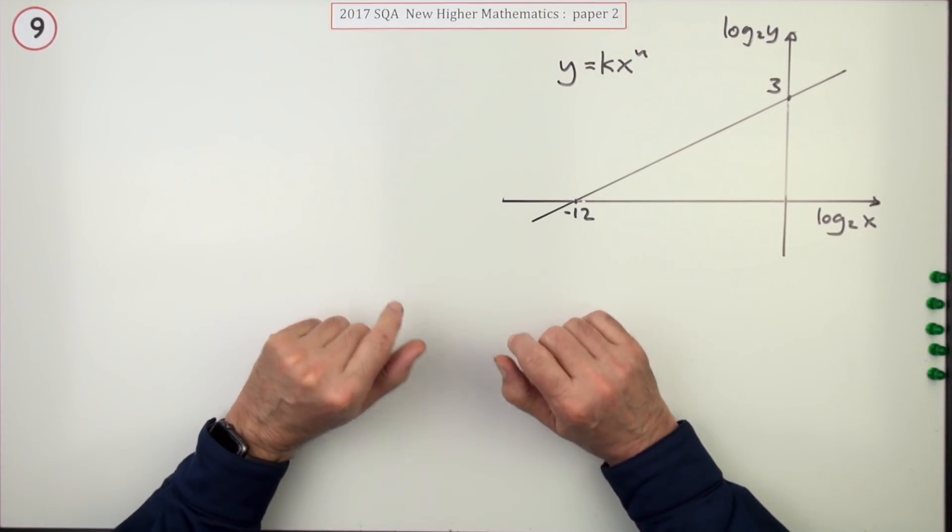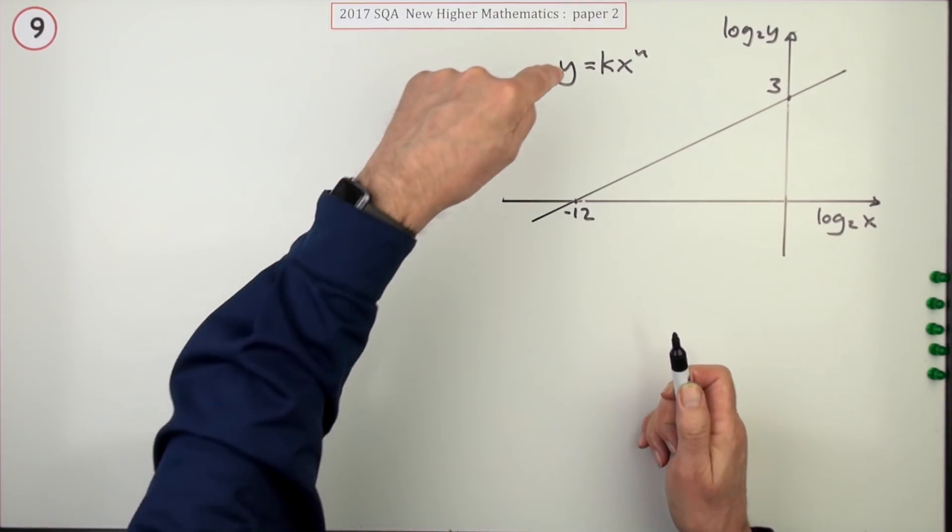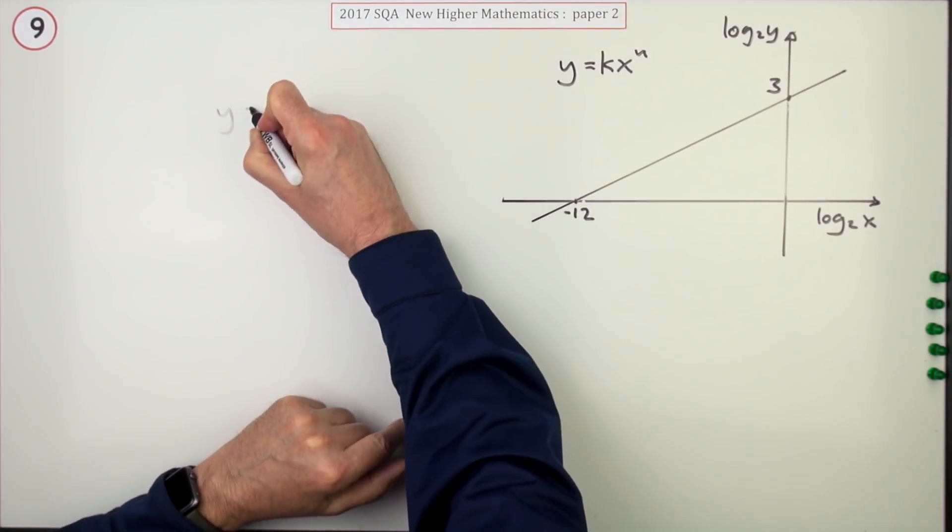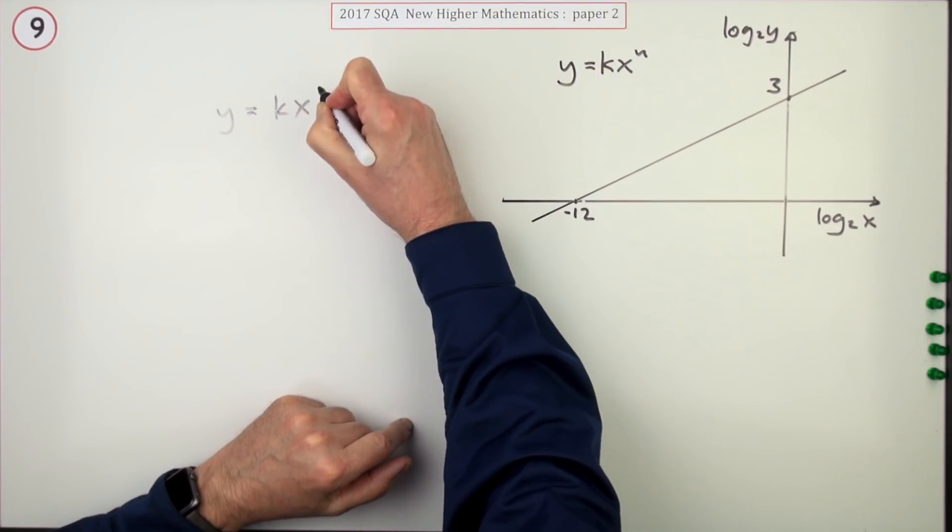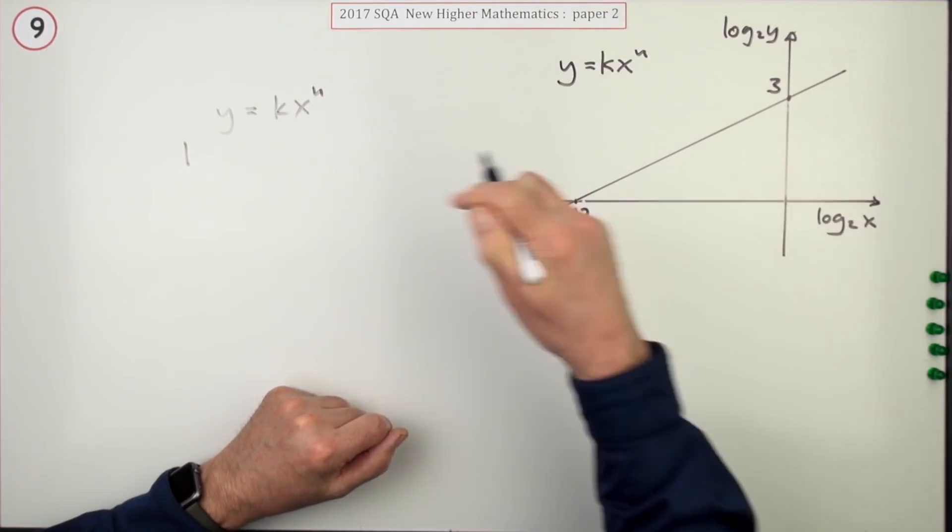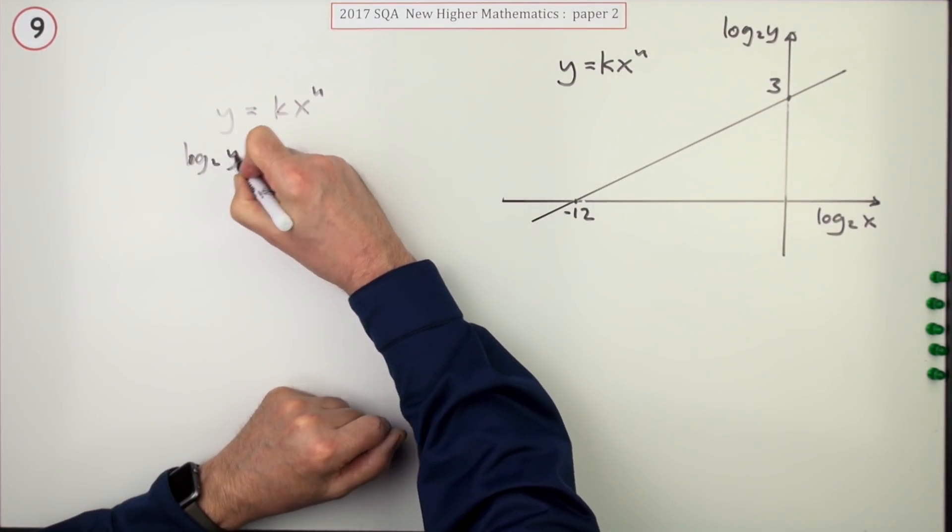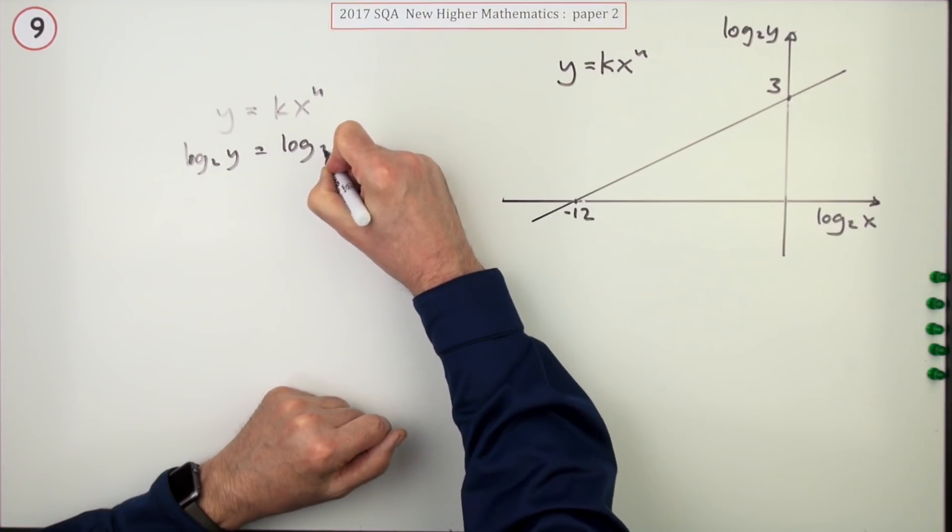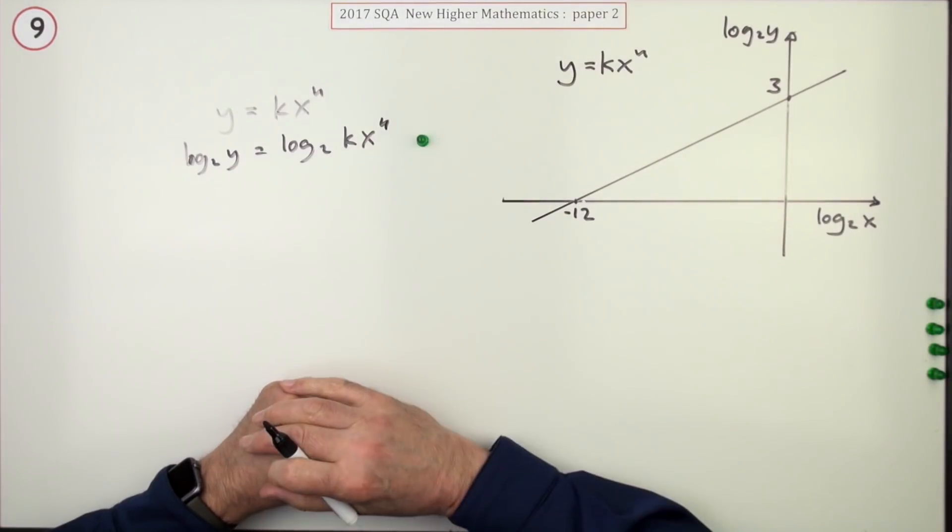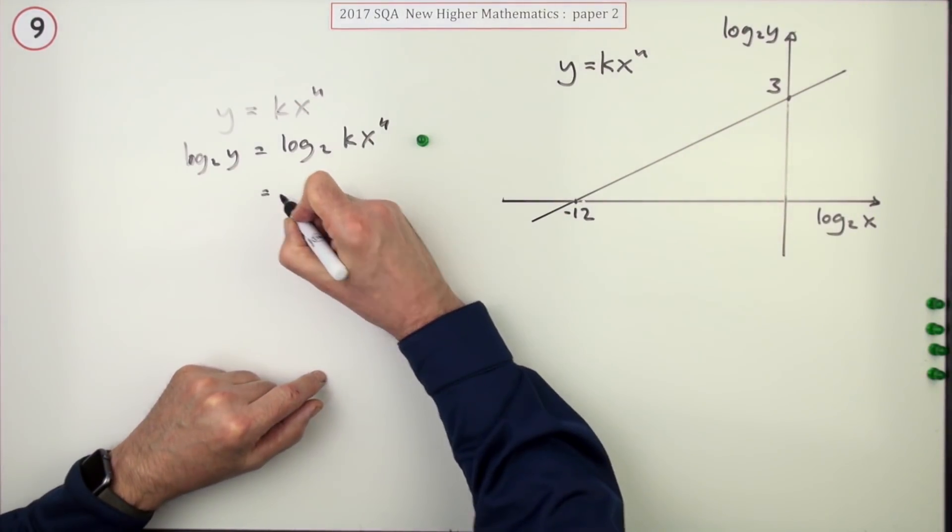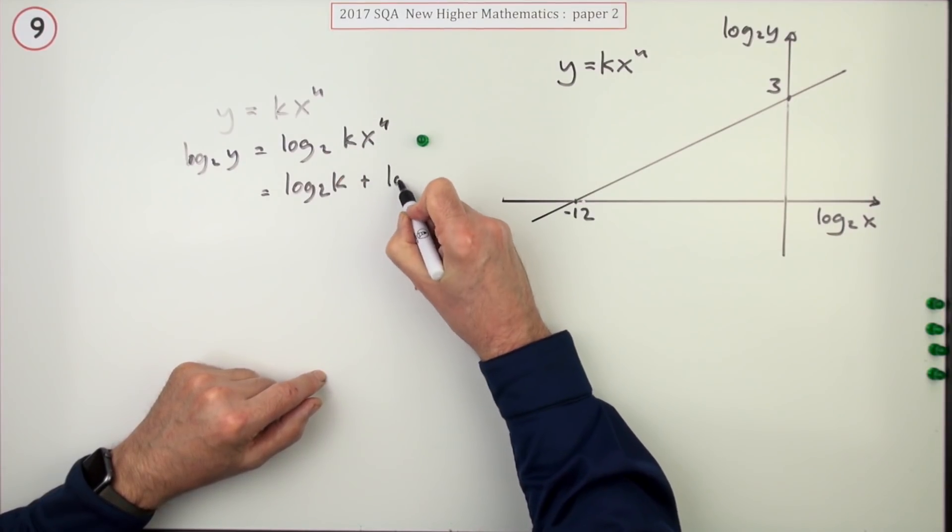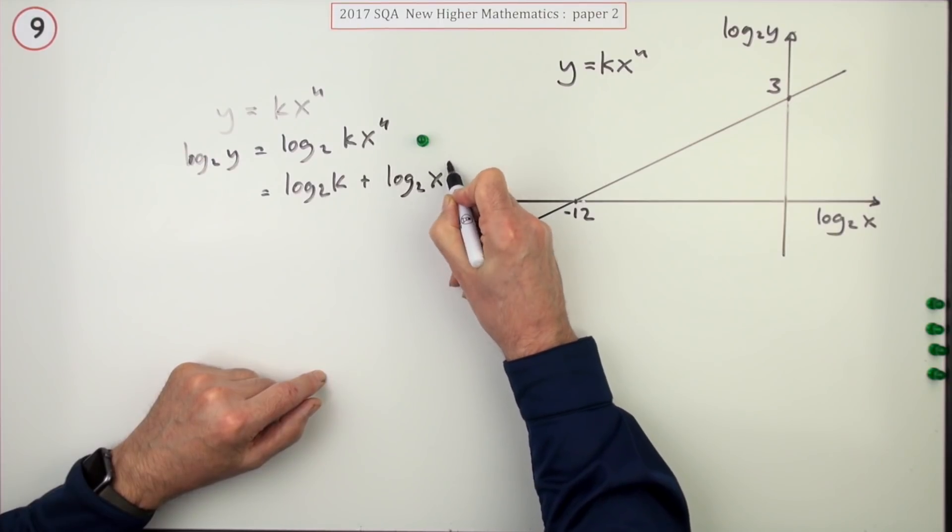The other way would be to start with this and fiddle with that until it looked like this. So you'd start off with Y equals KX to the power N. Introduce logs to both sides because you notice you've got logs here. So log base 2 of Y would be log base 2 of KX to the N. Doing that we get the first mark. Now expand that: that's log base 2 of K because it's a product plus log base 2 of X to the N.